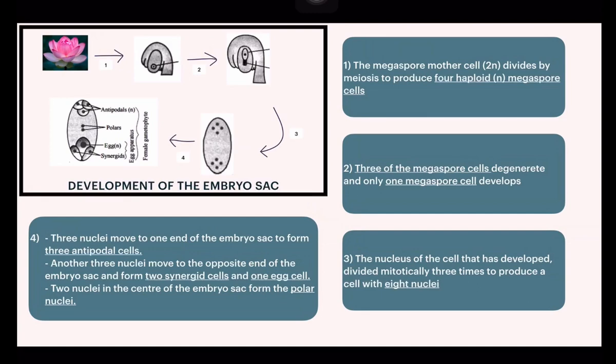The nucleus of the developed cell divides mitotically three times to produce a cell with eight nuclei. Three nuclei move to one end of the embryo sac to form three antipodal cells. Another three nuclei move to the opposite end to form two synergid cells and one egg cell. The two remaining nuclei in the center of the embryo sac form the polar nuclei.